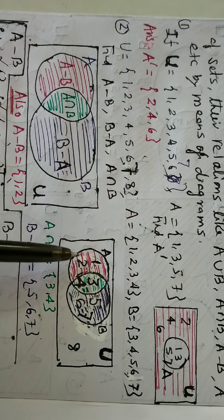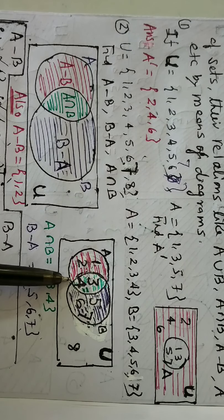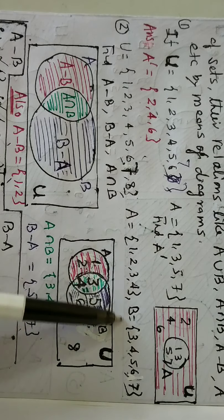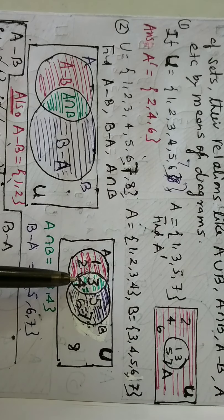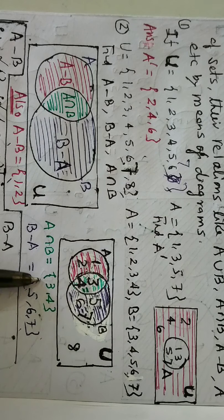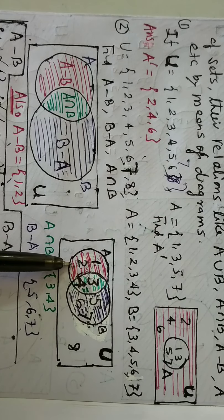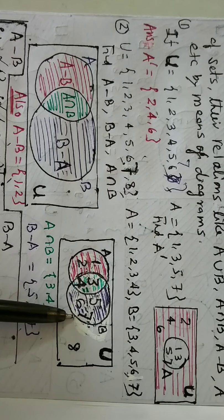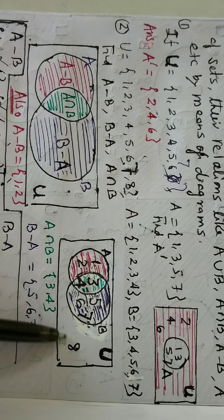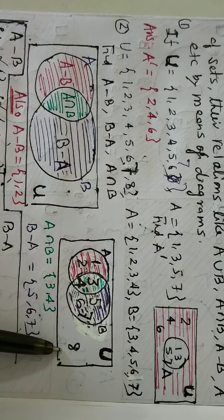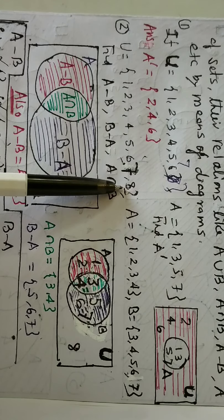The numbers are kept wherever they are eligible. For example, 3 and 4 are common to both A and B, so I have written 3, 4 in between — that is the intersection. Other members of A, which are 1 and 2, are on the A side. And 5, 6, 7 are on the B side. One more element, 8, is outside.